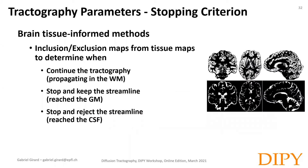One solution is to incorporate this information in the tractography method. On healthy brains, we know tractography should continue in the white matter, shouldn't stop in the CSF, and must reach the gray matter. We can thus better define those rules using the partial volume estimate of each tissue type. Moreover, partial volume estimates allow the tractography to determine if the generated streamline should or shouldn't be included in the final tractogram. Essentially, by knowing the tissue type, we can keep only the streamlines that end in the gray matter.